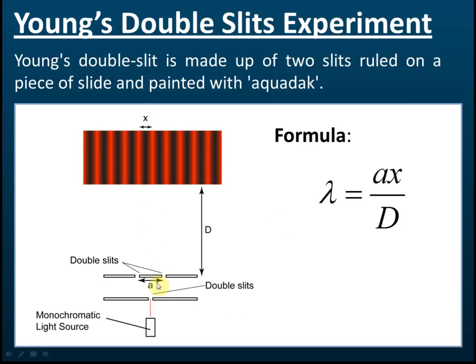From here we can see that there is a monochromatic light source. If you still remember, when we discussed diffraction, we already learned that monochromatic light means light with only one color, or one frequency, or one wavelength. So we use a monochromatic light — in this case, a red light.